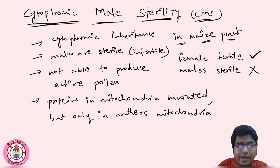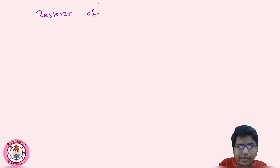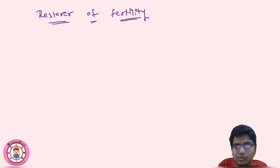There is one factor which can suppress cytoplasmic male sterility. Since CMS is a mitochondrial inheritance, we need a factor that can overcome it. This factor is known as the restorer of fertility, because it restores fertility. It is abbreviated as Rf.